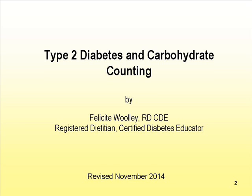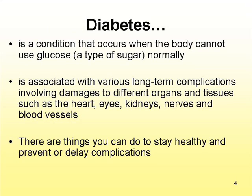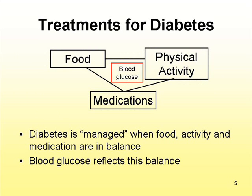Type 2 diabetes and carbohydrate counting — how to count carbohydrate using measuring cups and label reading, and how to plan balanced meals. Before we start, I'd like to explain what diabetes is so that we're all on the same page. Diabetes is a condition that affects blood sugar, and it is associated with various long-term complications. Diabetes medication and food all affect blood glucose balance, and for today's presentation, I'm going to be focusing on the food.